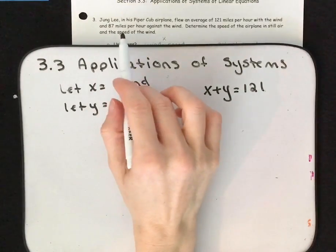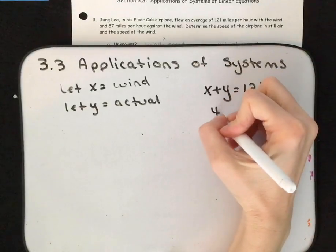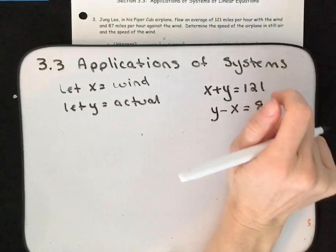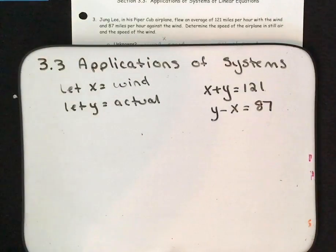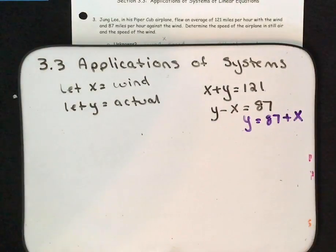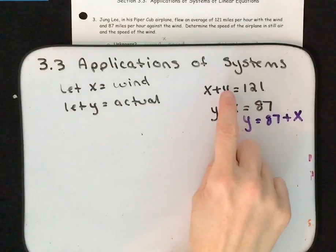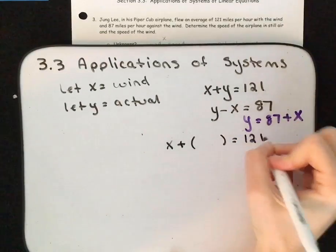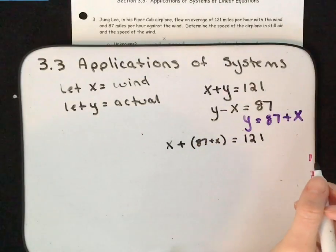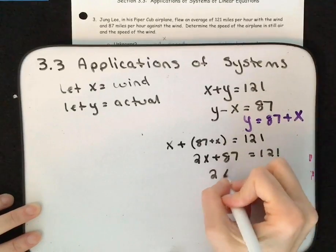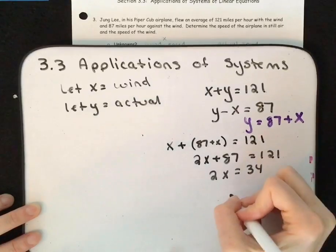Then it says 87 miles per hour against the wind, so against the wind means the speed of the airplane minus the speed of the wind equals 87: Y minus X equals 87. Now let's solve one of these for Y. From Y minus X equals 87, we get Y equals 87 plus X. Substituting into X plus Y equals 121: X plus (87 plus X) equals 121, simplifying to 2X plus 87 equals 121. Moving 87 over gives 2X equals 34, so X equals 17. The speed of the wind is 17 miles per hour.